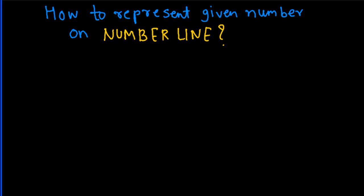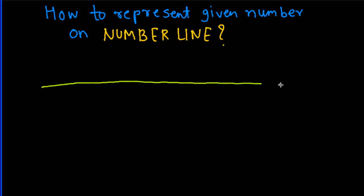Hello, and today we are going to talk about how to represent a given number on a number line. Before I start with the examples, let us revise some concepts about the number line. A number line is simply a horizontal line which extends infinitely on both sides. The arrows show that the line is extending infinitely in both directions.